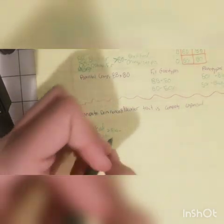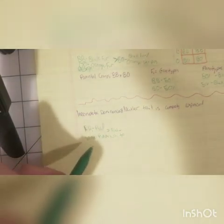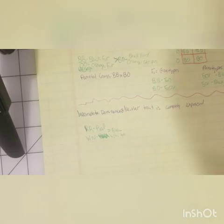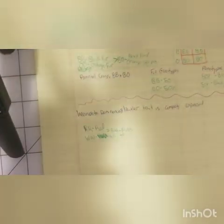When white and red mix, you get pink — that is your third phenotype, the middle ground between the two originals.